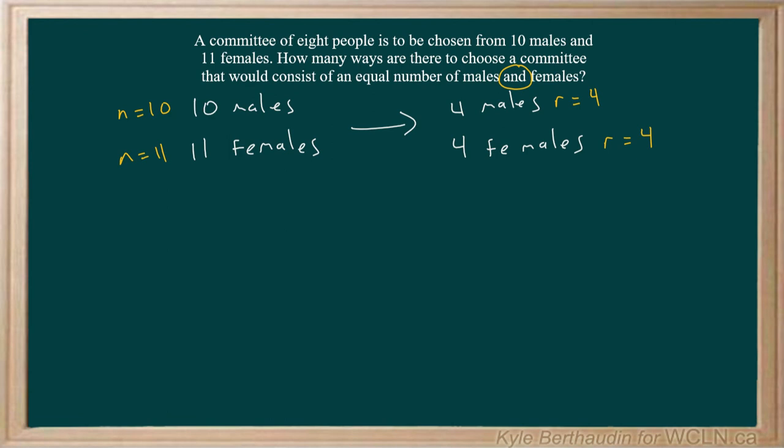So let's set it up. Looking at the number of males, n choose r becomes 10 choose 4, 10 males, and we're choosing 4 of them. And we're going to multiply this by the number of combinations for females, which is 11 females, and we're choosing 4 of them.